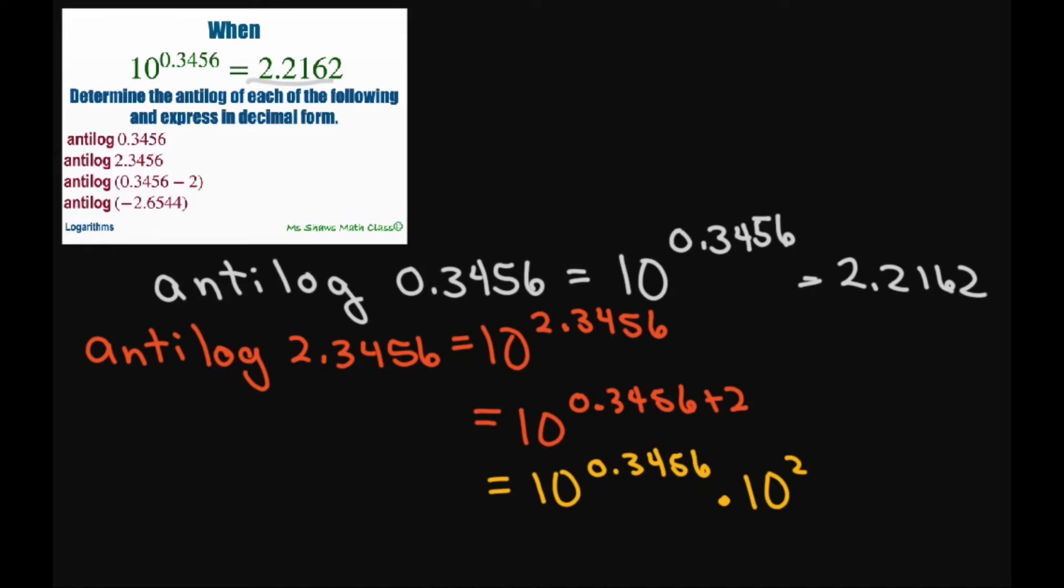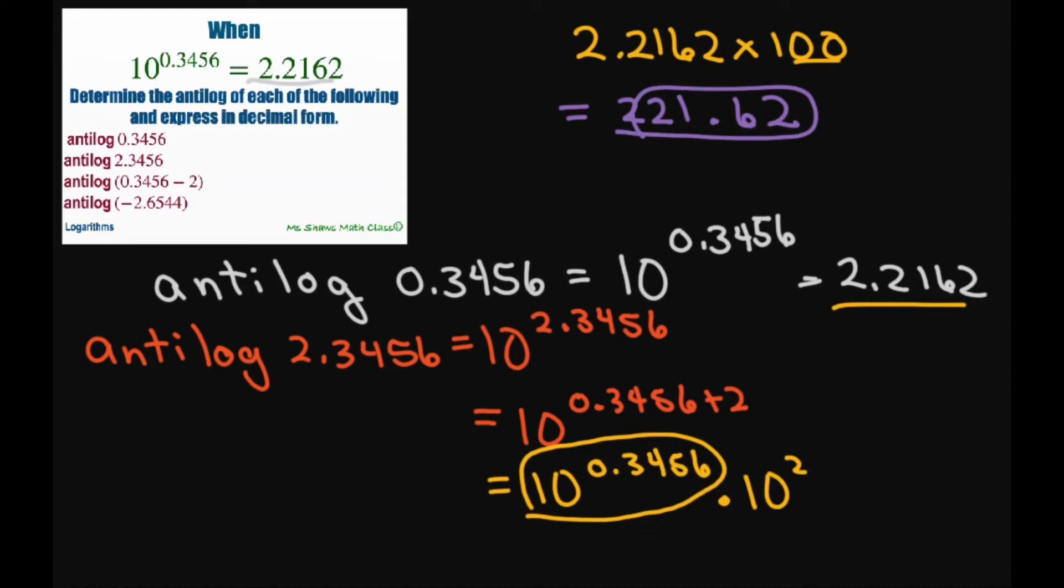So all you have to do for this is take this one, which is this number here, 2.2162 times 100, or just move the decimal place down by 2, the two zeros. So this is going to give you 221.62. So that's for the second one.